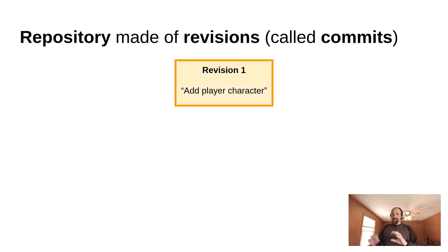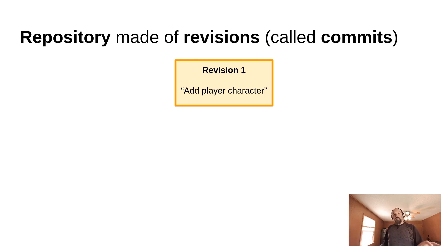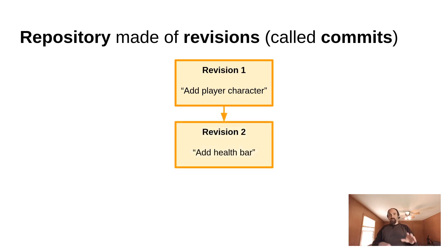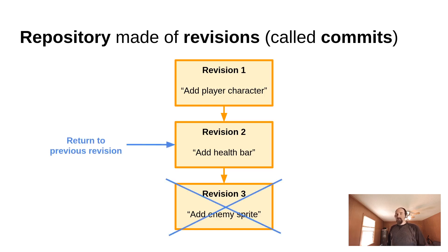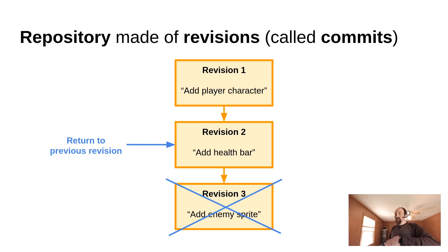A repository is made up of a set of revisions — in Git and other revision control systems, they're frequently referred to as commits. So in revision number one, you added your player character. Then you changed some scenes, changed some GDScript files, added the health bar — so that's revision number two: 'add a health bar.' Revision number three, you added the enemy sprite. What makes a revision control system really useful is that you can go back to any of these revisions at any time — either temporarily just to see what the game looked like at an earlier revision, or to completely revert a revision if what you were doing just didn't make any sense.